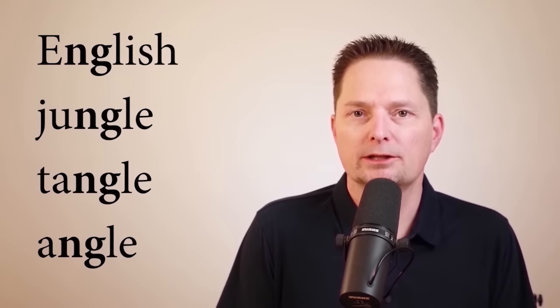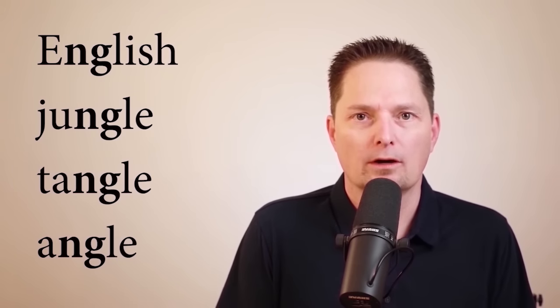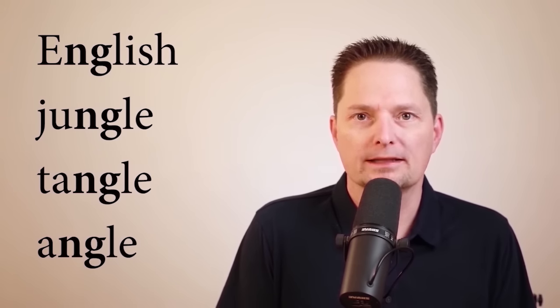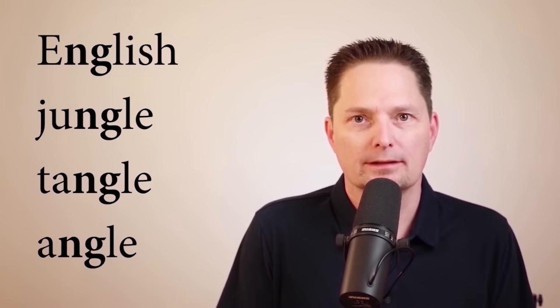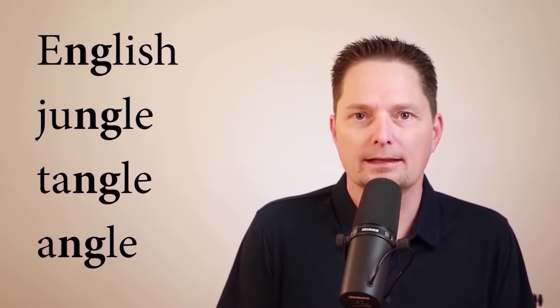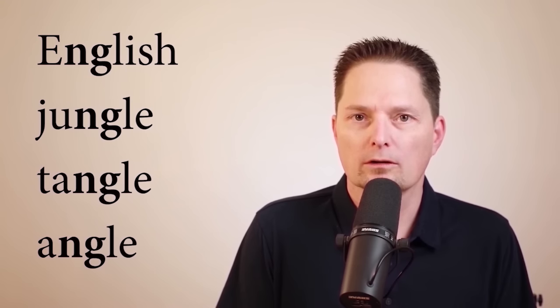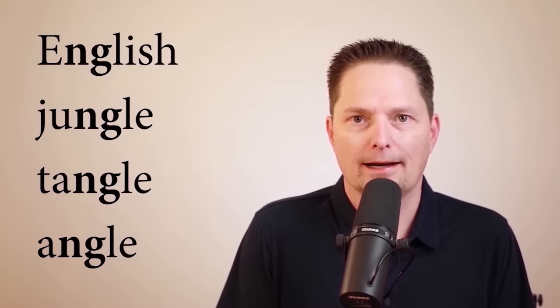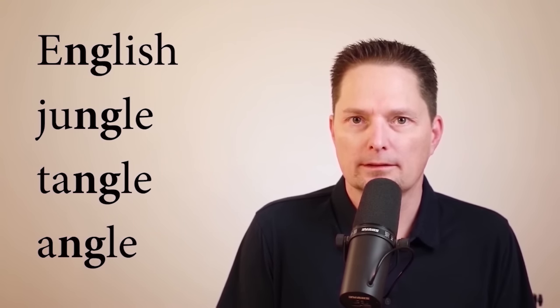Now let's look at NG when we have an L after it — N-G-L. When you have an L after it, it makes the hard G sound, like 'English,' 'jungle,' 'tangle,' and 'angle.' These are pronounced with the hard G sound. Example: 'Monkeys live in the jungle.' You have the nasal N sound and the hard G: jungle.